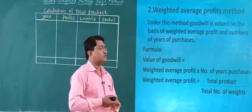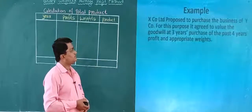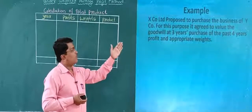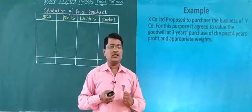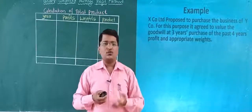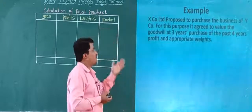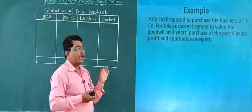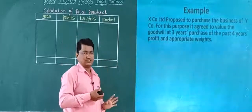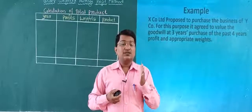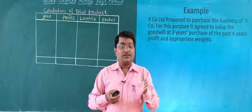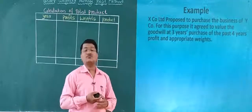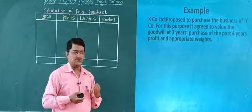Let's now move to an example. X Company Limited proposed to purchase the business of Y Company. For this purpose, it agreed to value the goodwill at three years' purchases — so the number of years' purchases is three.